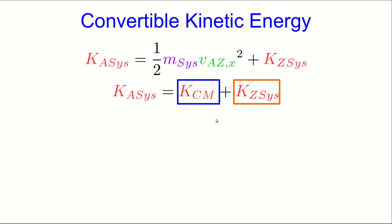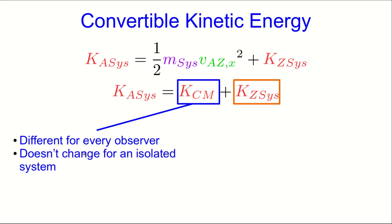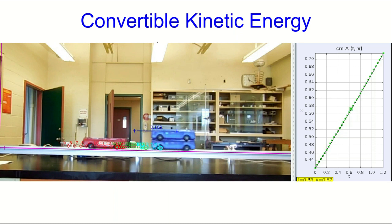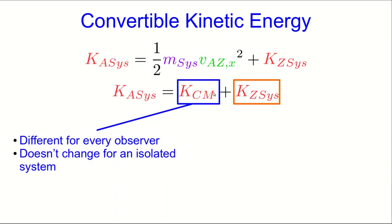This kinetic energy of the center of mass is going to be different for every observer because every observer in general is moving at a different velocity relative to the center of mass. And we've seen already in an earlier video lecture that the center of mass for an isolated system moves at a constant velocity. And so we expect that for isolated systems, this kinetic energy of the center of mass doesn't change.